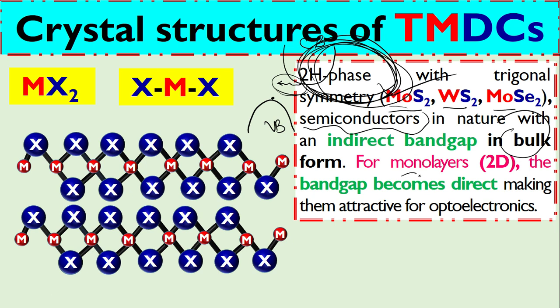When we exfoliate the three-dimension and get monolayer or few layers of atoms—that is basically two-dimension—that material will become direct bandgap, which is very interesting. Direct bandgap means the valence band is exactly here and on top is the conduction band.